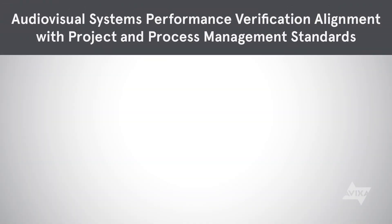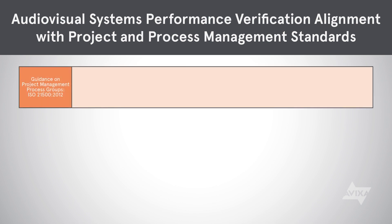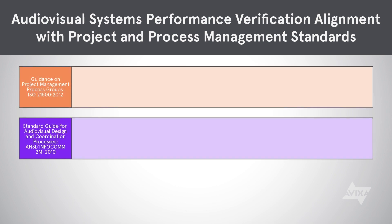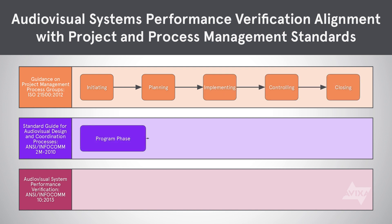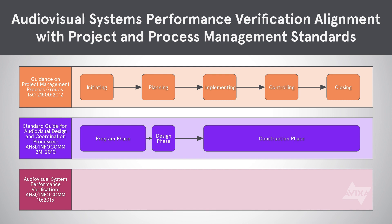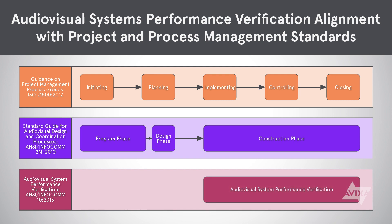This next graphic is helpful for those who like timelines. The orange top line represents the ISO 21500 standard. The purple middle line is our 2M standard, and the maroon bottom line is our 10 standard. You can see that our two standards typically fall in a very similar outline to that ISO standard — we just call things a few different things and there's more detail because it's AV-specific.